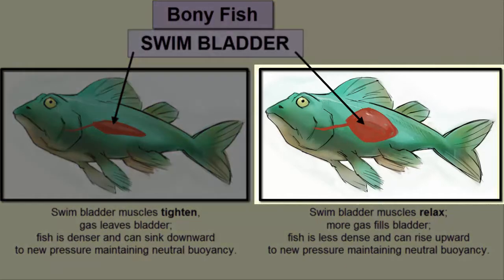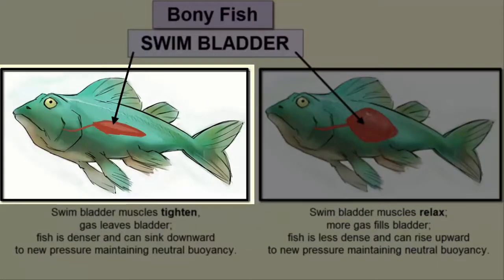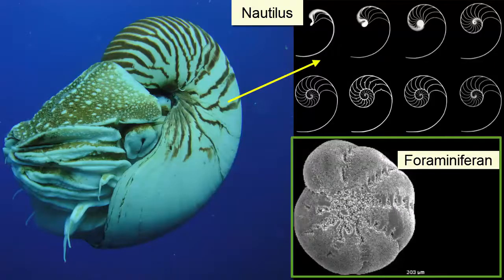If fish ascend too quickly — such as when caught on a fishing line — their internal bladders will be at much higher pressure than the outside environment, and the bladder will push outward and upward through the mouth, killing the fish. If fish with swim bladders descend too quickly, the outside pressure will exceed the pressure in their bladders and the fish will be squeezed inward. Fish with swim bladders must simply rise and fall slowly.